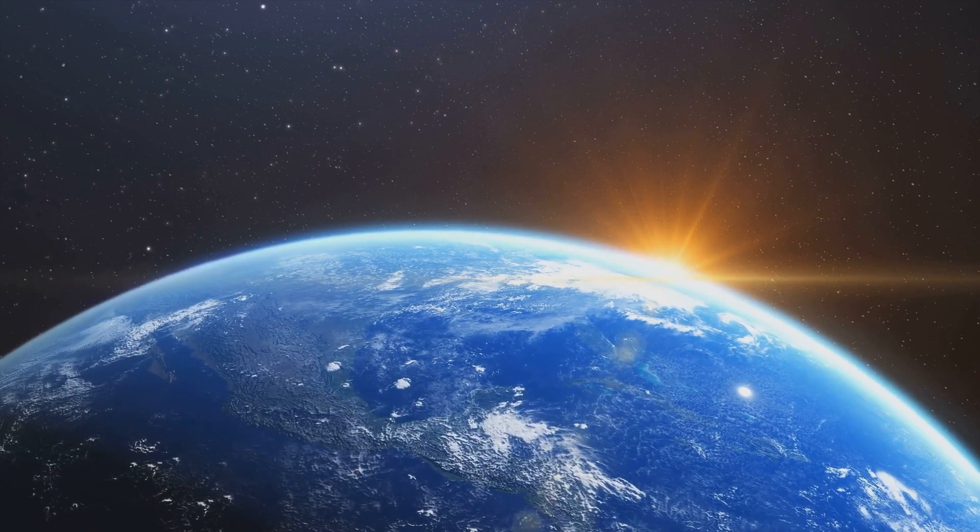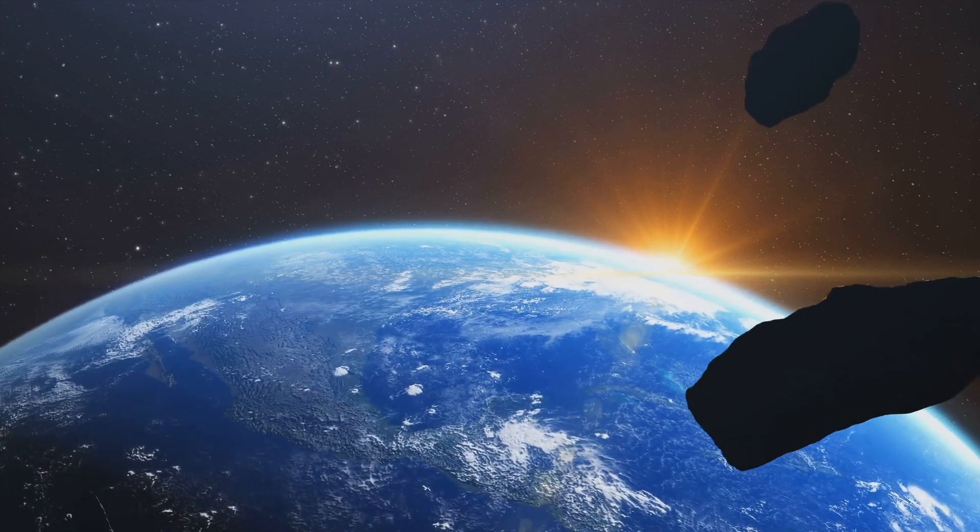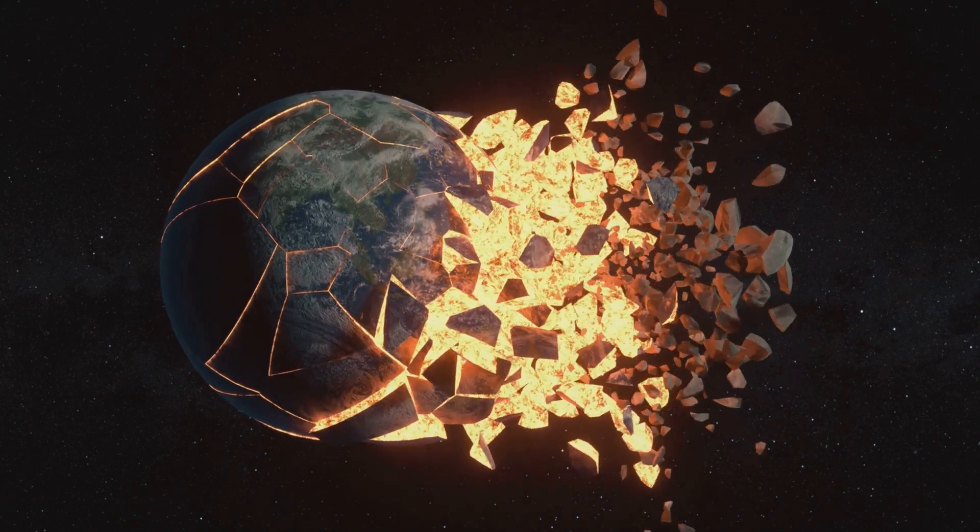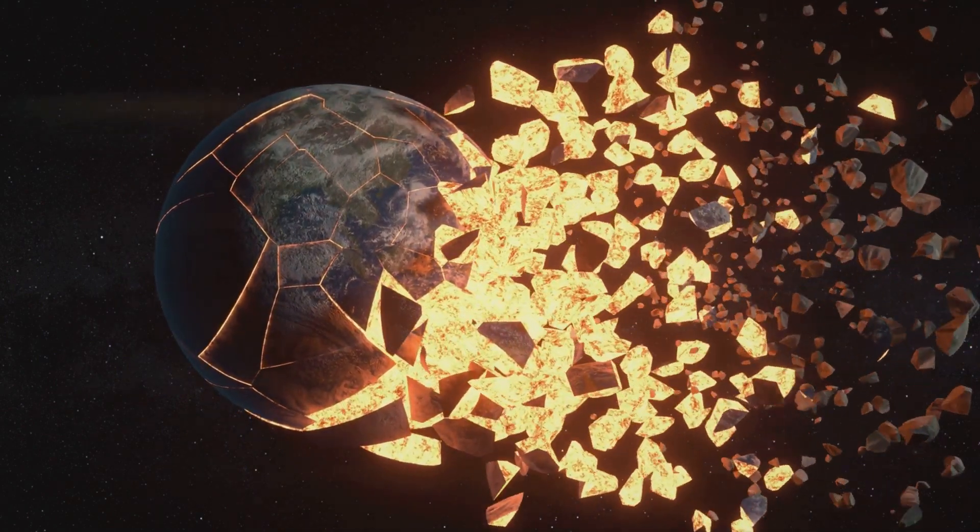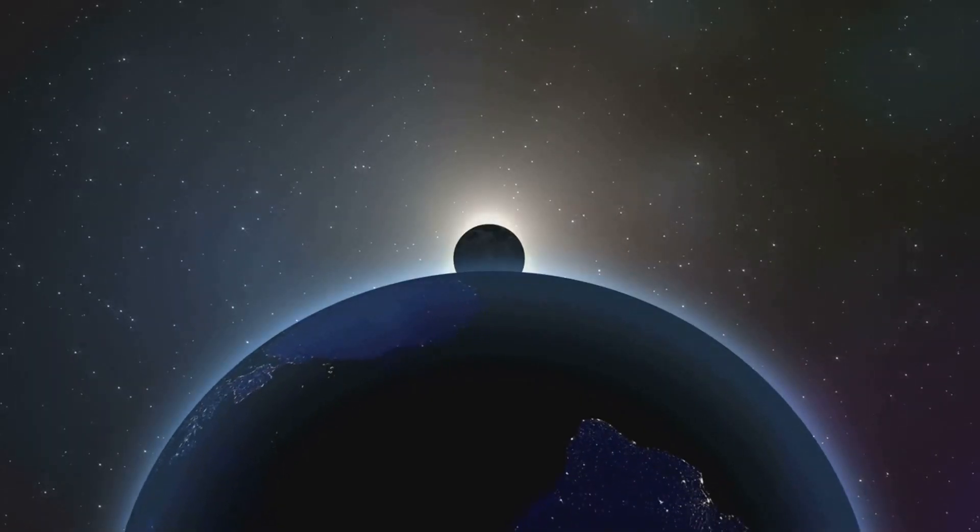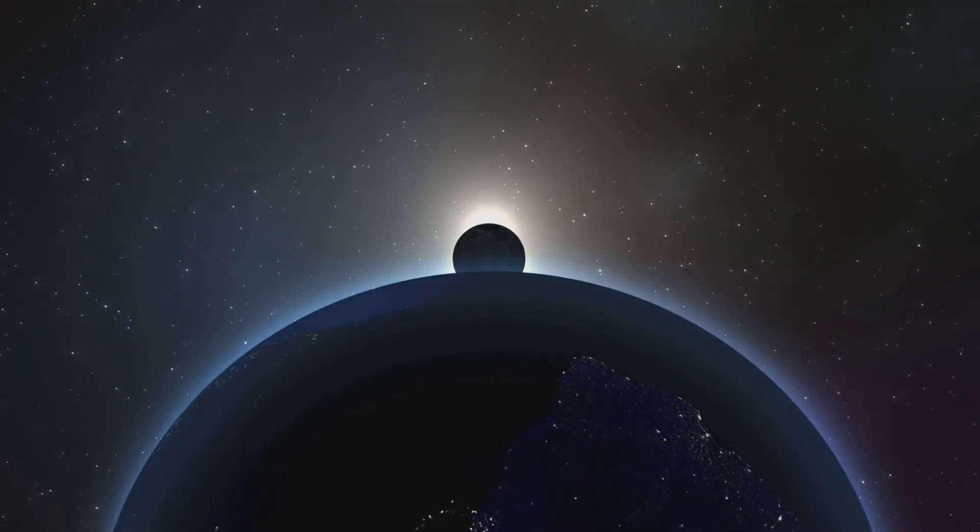This early Earth was a hostile place, bombarded by asteroids and comets. One such colossal impact with a Mars-sized body led to the formation of the Moon. The debris from this impact eventually coalesced and formed our satellite, forever bound by Earth's gravity.